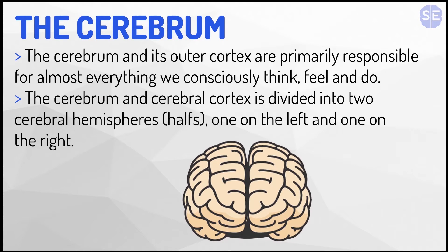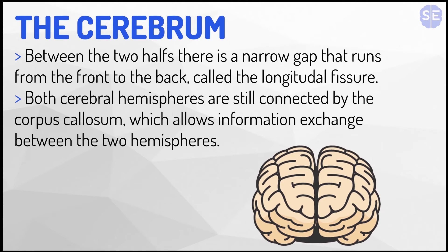The cerebrum and its outer cortex are primarily responsible for almost everything we consciously think, feel, and do. The cerebrum and the cerebral cortex are divided into two cerebral hemispheres — one on the left and one on the right, as we can see in this diagram. Between the two halves there's a narrow gap that runs from the front to the back called the longitudinal fissure, which is the gap visible here.